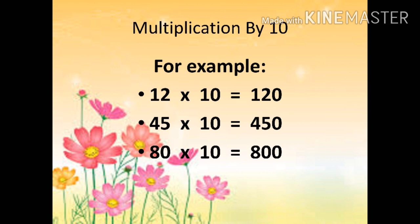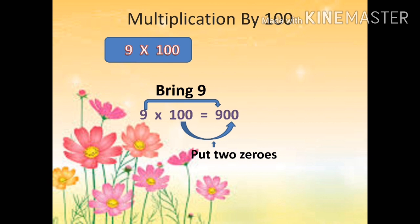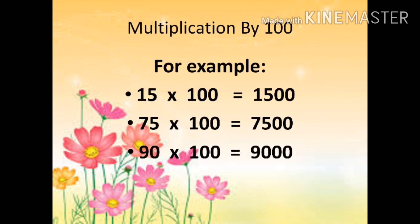Now let's move to the next topic: multiplication by 100. In the given example, 9 multiplied by 100, we will keep 9 as it is and we will put two zeros. Why two zeros? Because in 100 we are having two zeros, and it becomes 900. Now let's see some more examples.